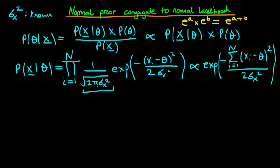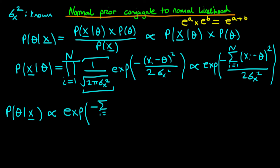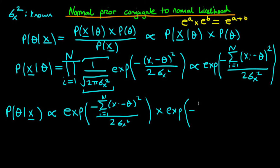Similarly for the prior, we're going to forget about the constant prefactor because it doesn't contain any theta dependence either. So for the posterior, the probability of theta given x is proportional to: exp of minus the sum from i equals 1 to n of (x_i minus theta) squared divided through by 2 sigma_x squared, times the exponent of minus (theta minus theta_0) squared divided through by 2 sigma_theta squared, where we assume the prior density has mean theta_0.